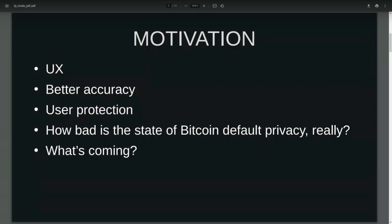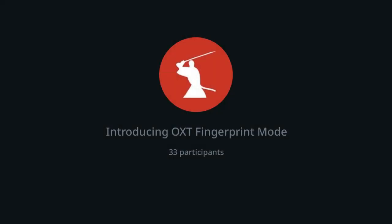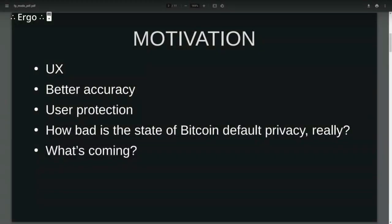We've used fingerprinting quite a bit and it's becoming more common. One of the biggest examples was identifying the custodial tumbler Blender as it piggybacked off of Wasabi's coin joins — we picked up that very distinct fingerprint. And so not only do we get better UX and better accuracy, but if you're auditing your transactions with OXT, you can get a better sense for just how bad things really are — what is the state of Bitcoin's default privacy.